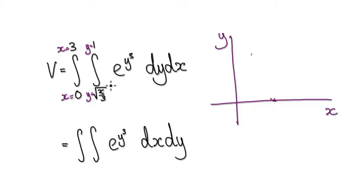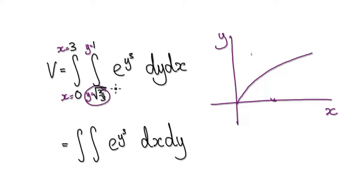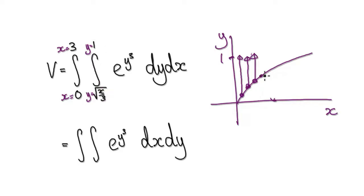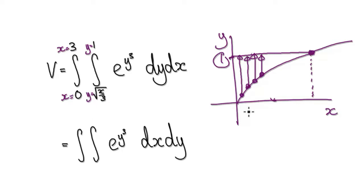Let's sketch the line y equals root(x/3) — it would look something like this. It's saying move from here to here, moving parallel to the y-axis: start at the line and end at one. So our region will look something like this. If y equals one, then x must be three.